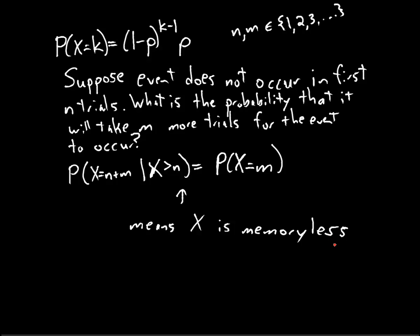It turns out that none of the other discrete random variables in this course are memoryless. We will encounter a continuous random variable that is also memoryless: the exponential random variable. Proving that the exponential random variable is memoryless will likely be a homework assignment, but you don't need to worry about that for at least a few weeks.